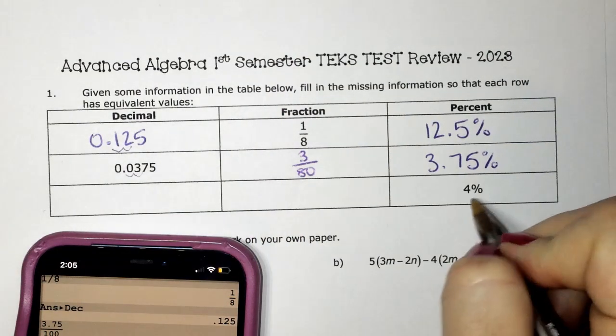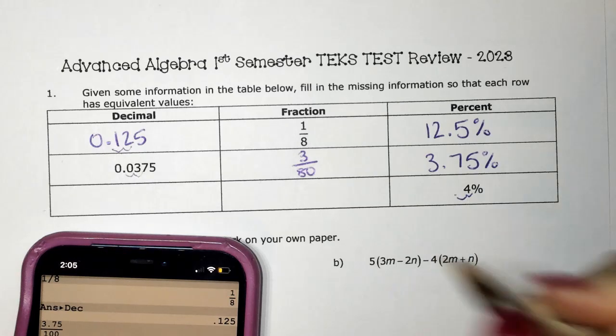Here 4%. We know to turn it into a decimal, we can move it twice left, and that would give me 0.04.